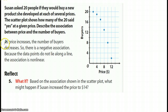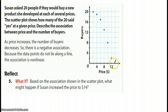So looking at what we see: as she increases her price, notice that the number of buyers goes down. As price goes from two dollars to four, there's a decrease. From four to six, there's a decrease. From six to eight is a decrease. The more she increases the price, the number of buyers decreases. So there is a negative association we can see. And because the data points do not lie along a line, the association is nonlinear.